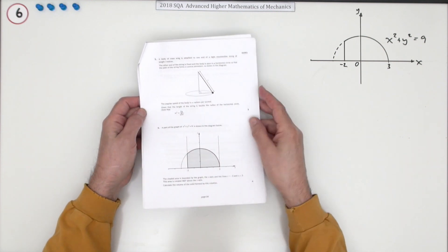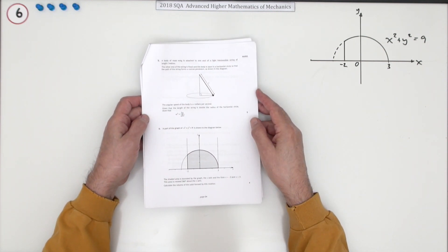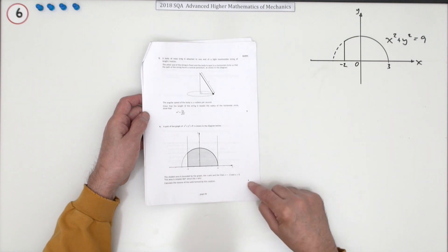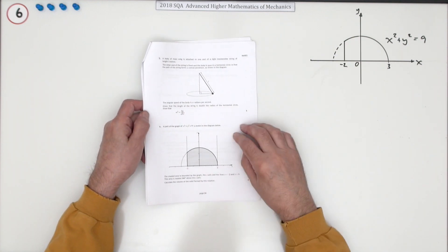So number six then from the 2018 SQA Advanced Higher Mathematics of Mechanics. Little four mark question here, volume of revolution.